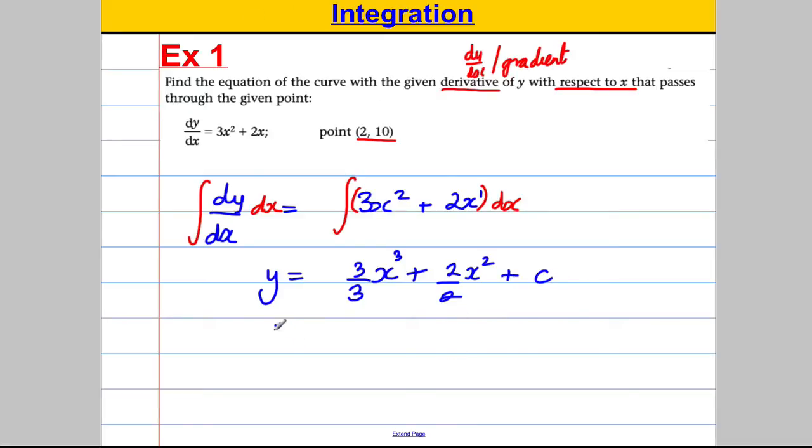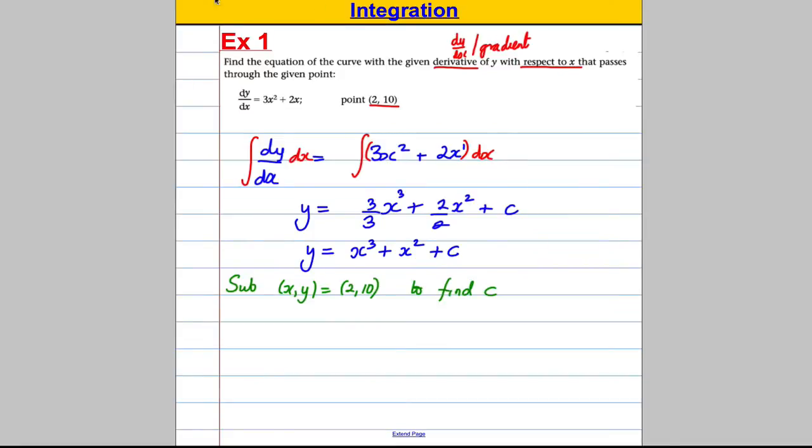Now let's tidy up before we try and find c. y is therefore 3 over 3 is 1, so that's x cubed. 2 over 2 is 1, so that's plus x squared, plus c. Now we're going to substitute x, y is 2, 10, to find c. So tell the examiner what you're doing. You're putting in x is 2 and y is 10 to find c.